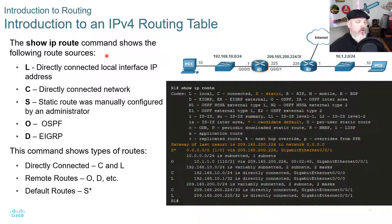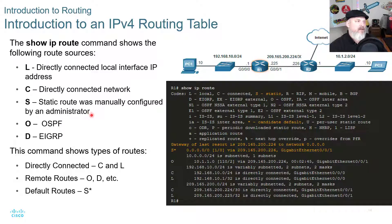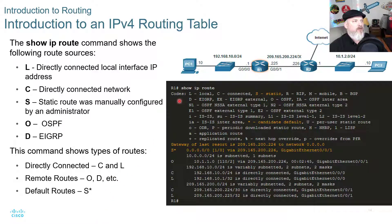Looking at the show ip route command on a router, we get the following output. L is directly connected and shows the directly connected local interface IP address. C is directly connected network, S is a static route that was manually configured, O is OSPF, and D is EIGRP. This command shows types of routes — directly connected (C and L), remote, and default routes. You can test this out on Packet Tracer or the routers that you're working with.